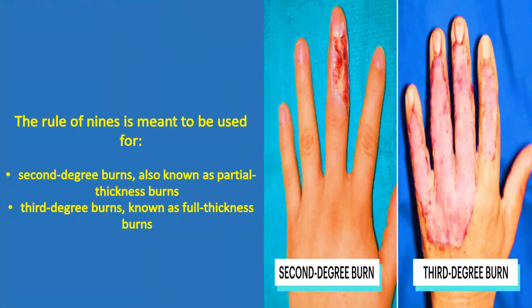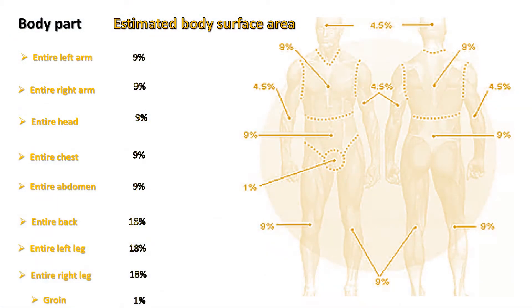The Rule of Nines is meant to be used for second-degree burns, also known as partial thickness burns, and third-degree burns, known as full thickness burns. It is a tool used to estimate a burn's percentage of your total skin.